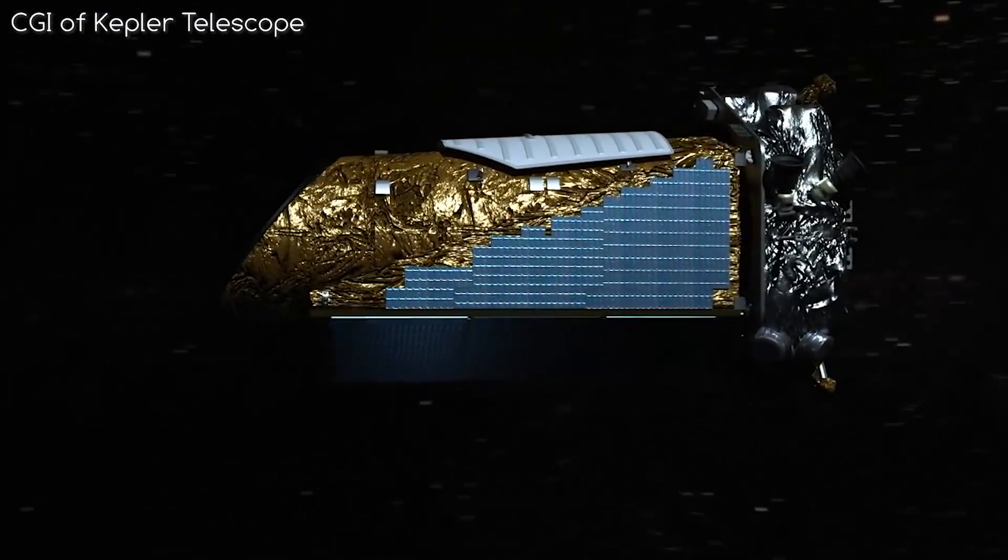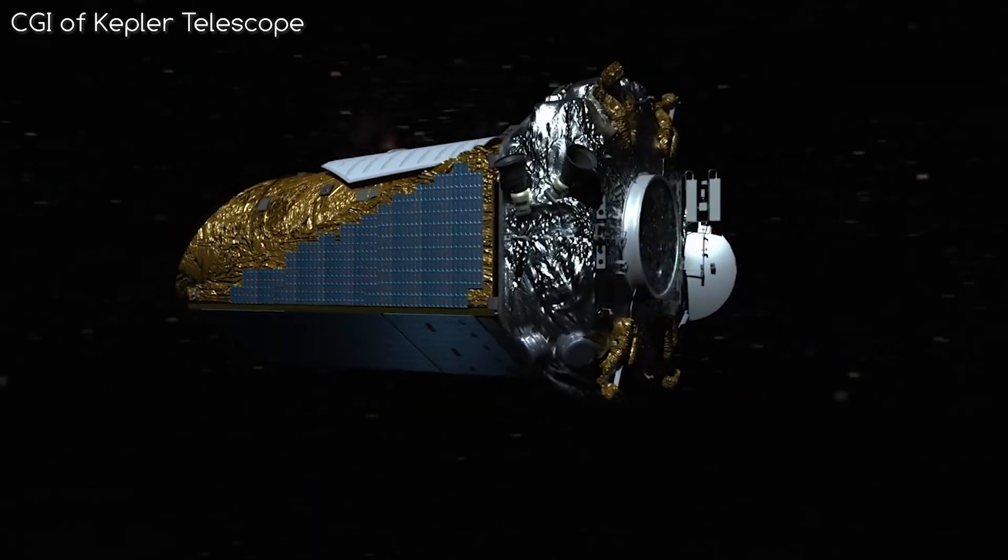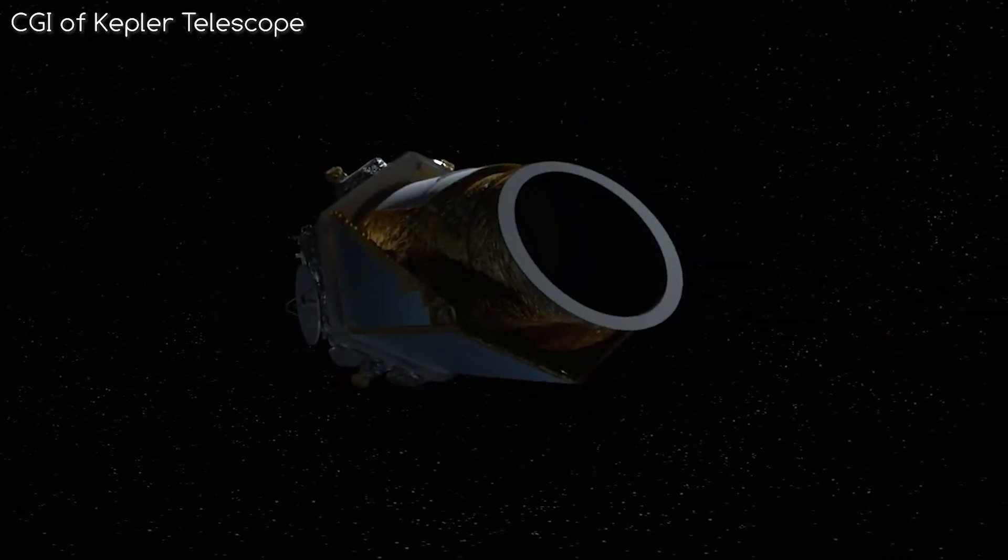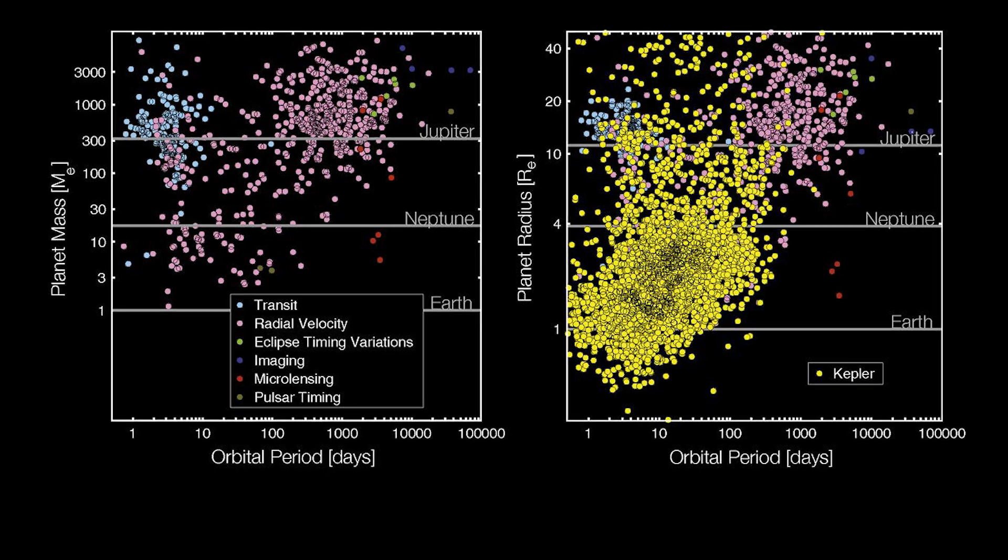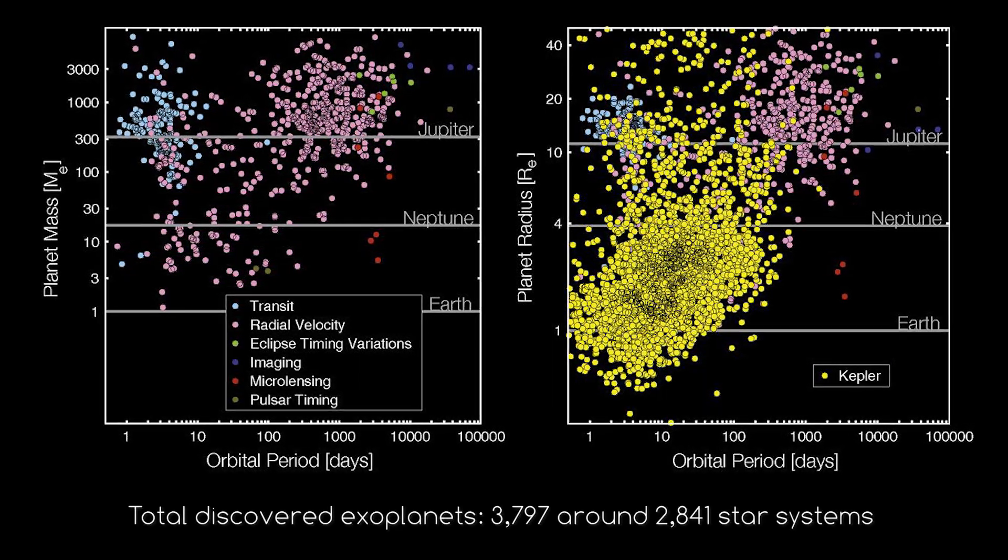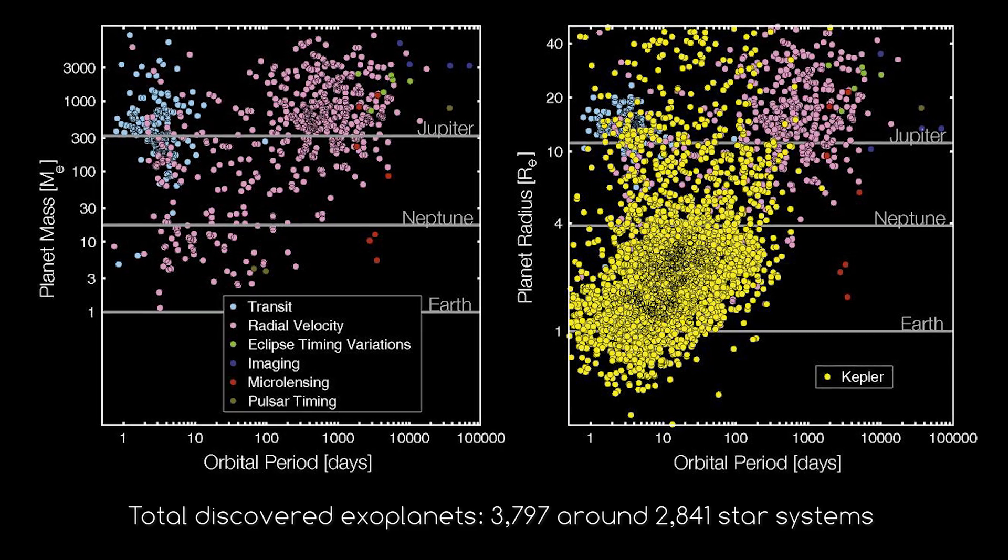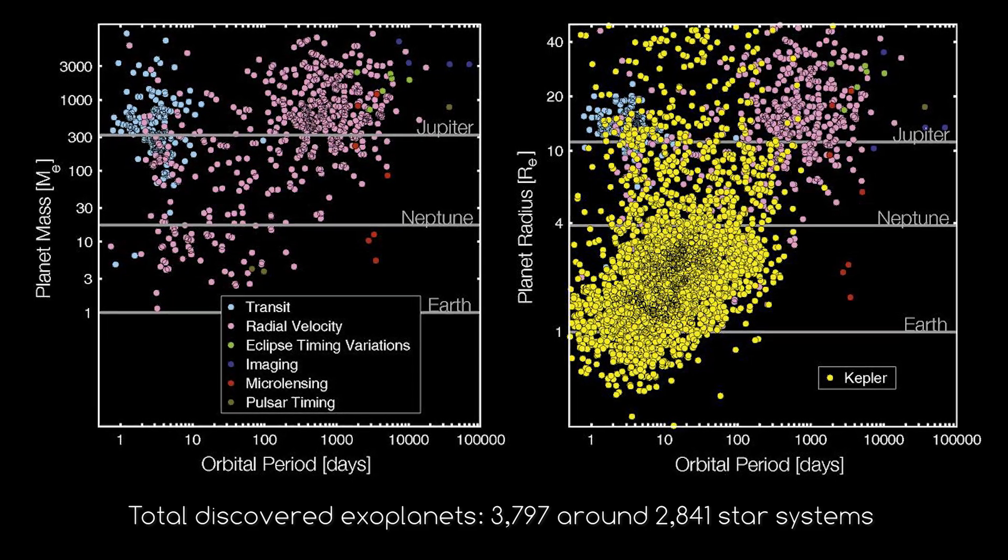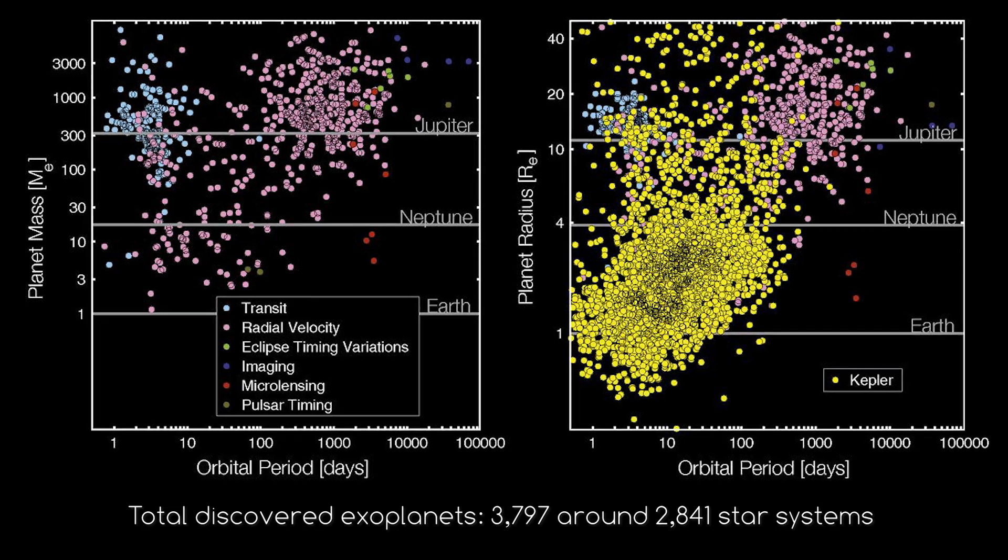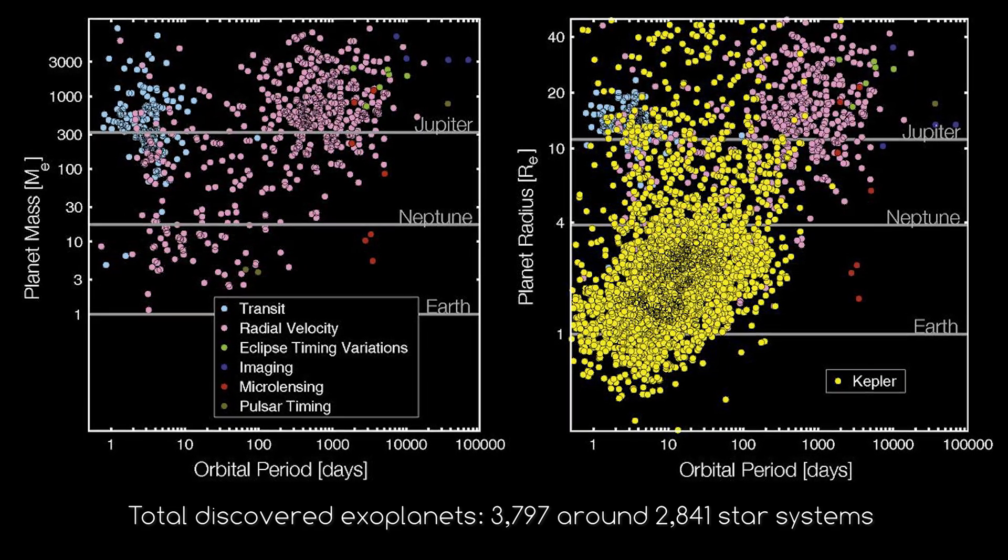You may have heard many news stories about all the thousands of exoplanets that have been discovered using the Kepler telescope. As of the 1st of July 2018, Kepler has confirmed the existence of 3,797 planets in 2,841 star systems, with 632 systems having more than one planet.